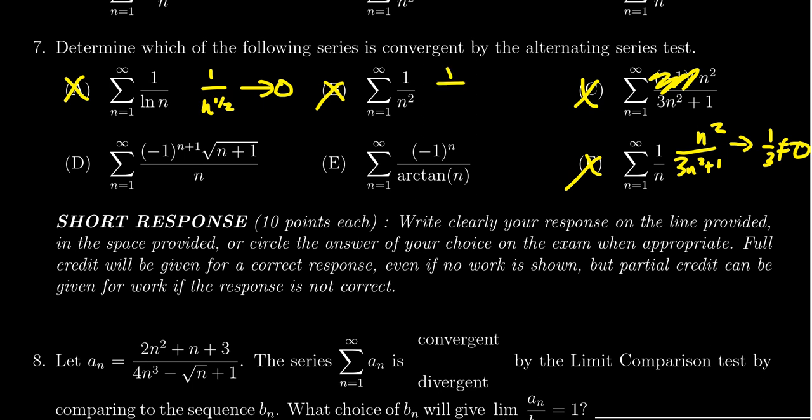This is not zero, so again this one doesn't converge by the alternating series test - it actually diverges by the divergence test. So by process of elimination it has to be D, but it also agrees with